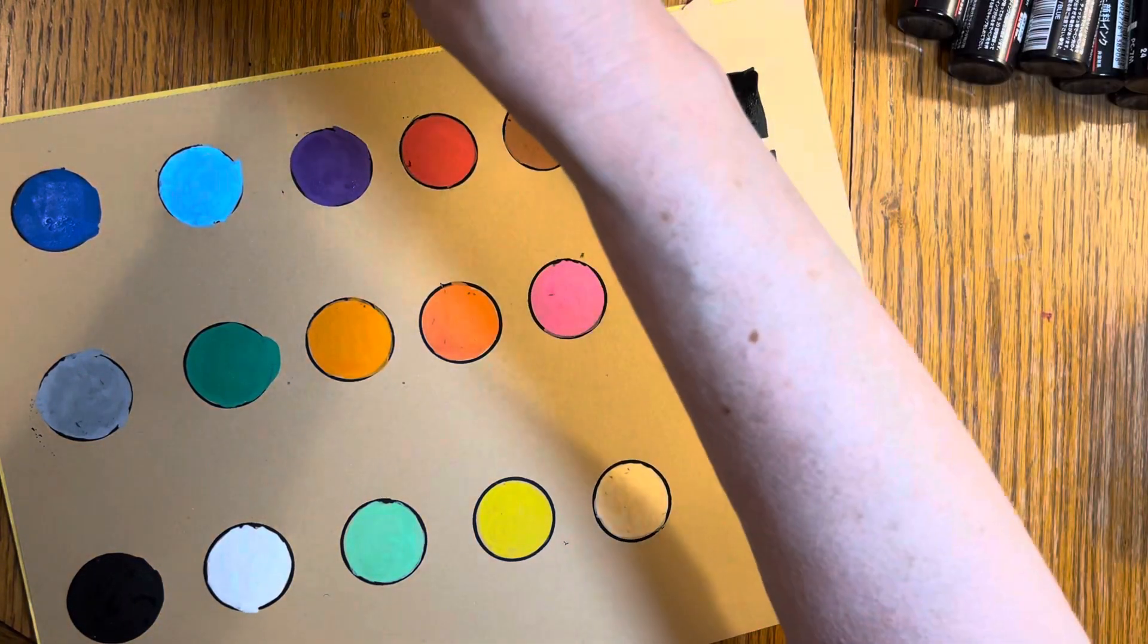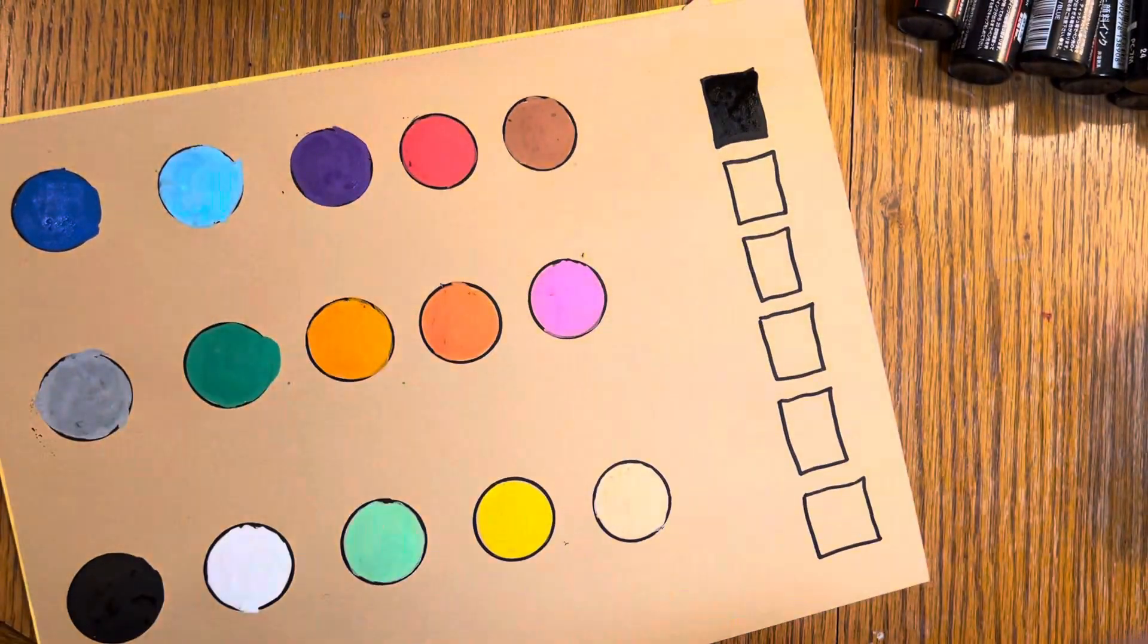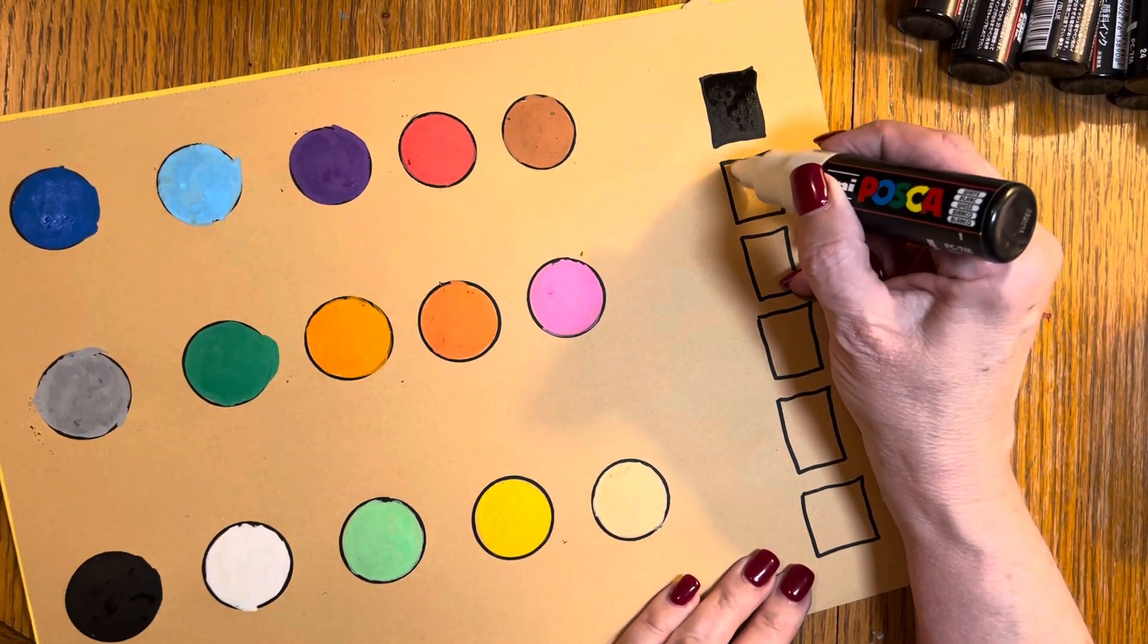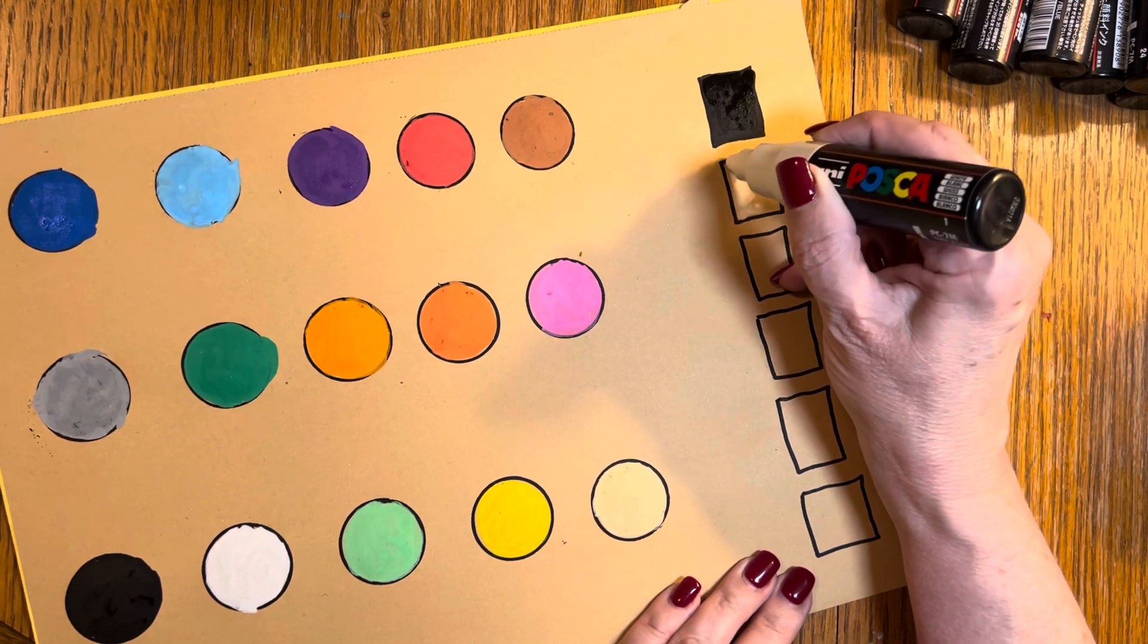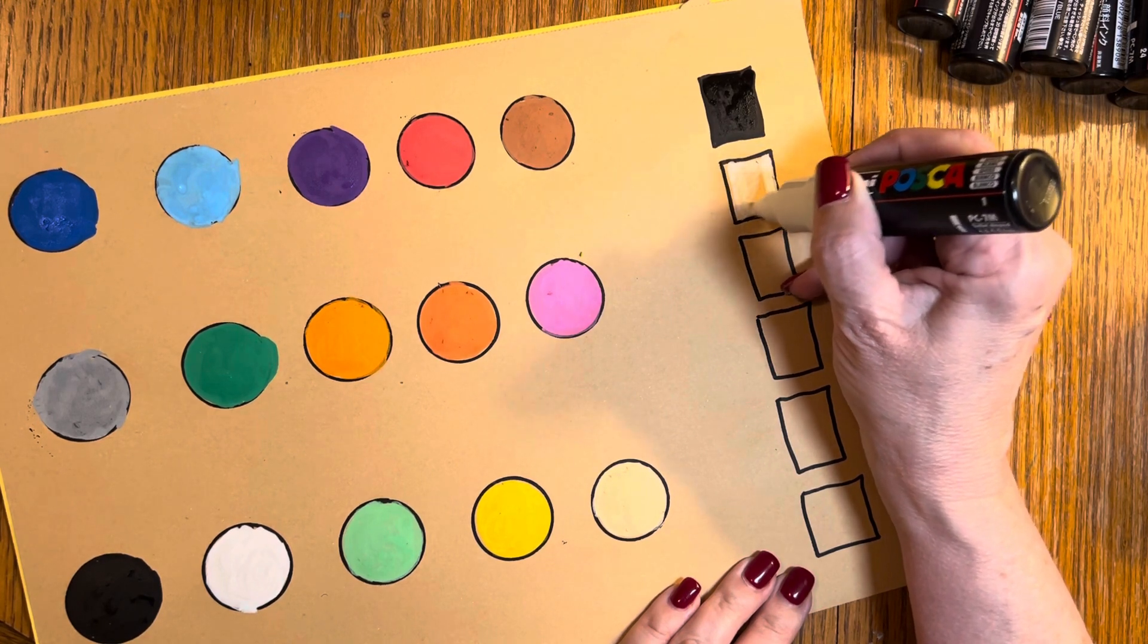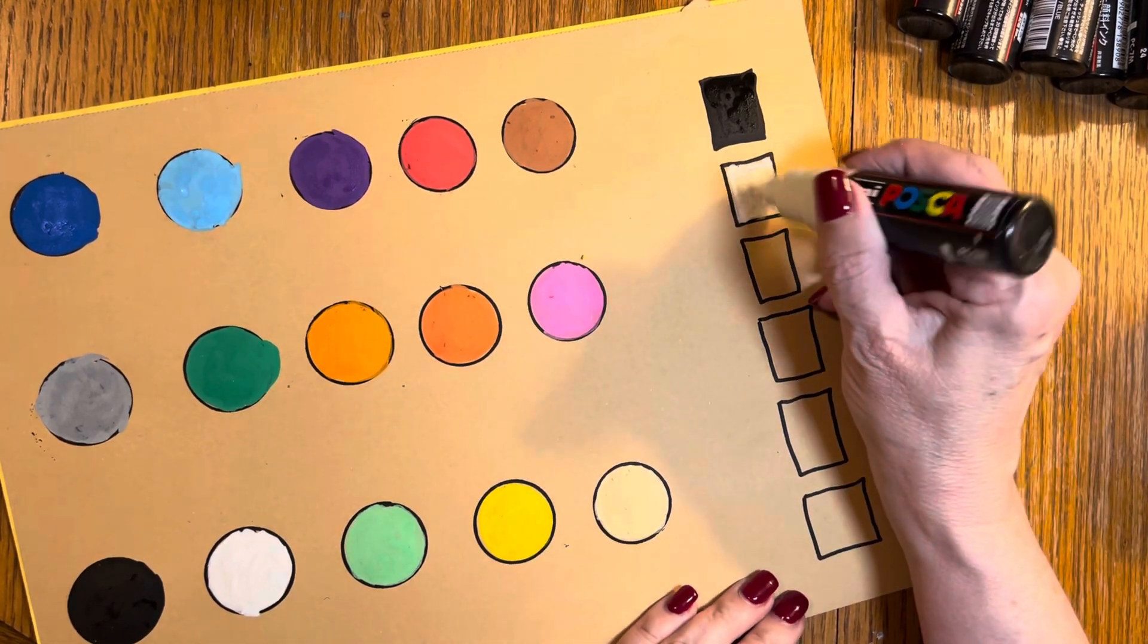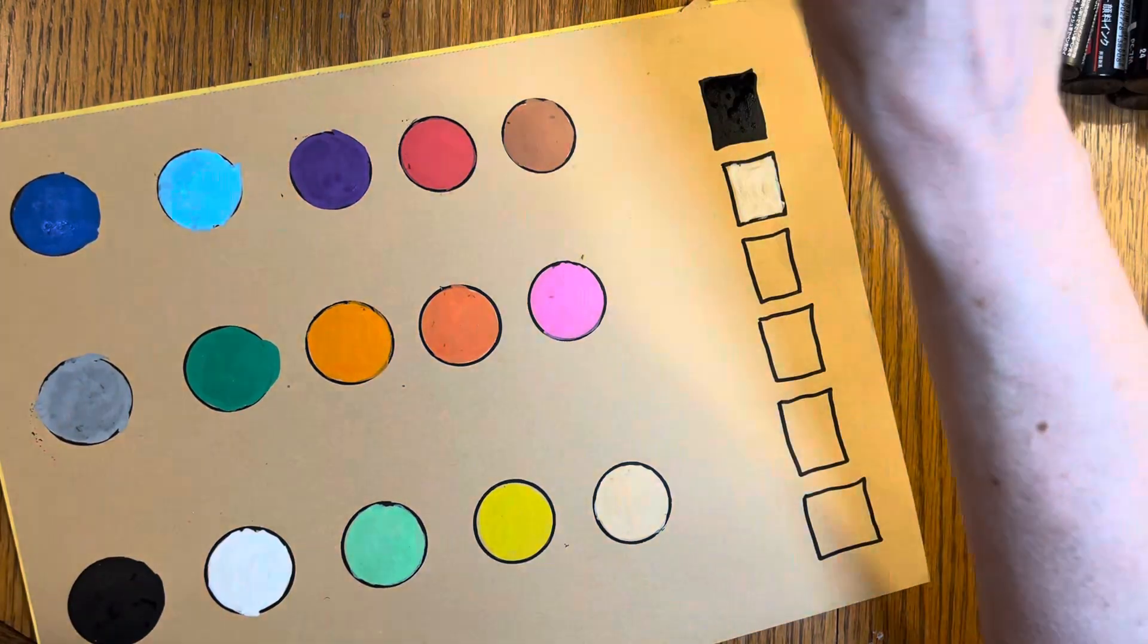And then we have a white one. I went ahead and opened these and got the ink going down for you. It's a bullet tip as they're called. Look at that, very nice. Bullet tip. Kind of went outside the lines, there's that. Very nice. Those whites really stick out on this tan sketchbook.